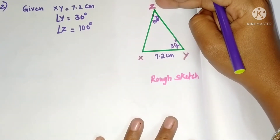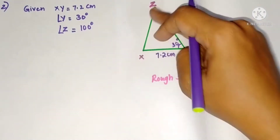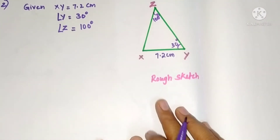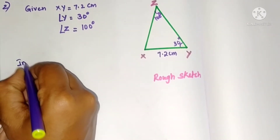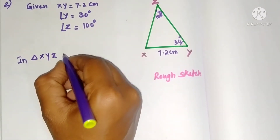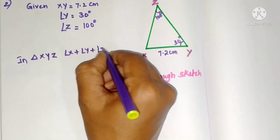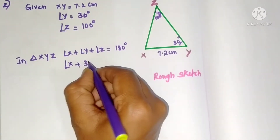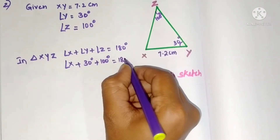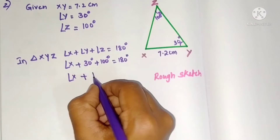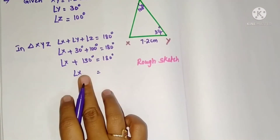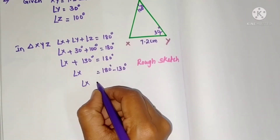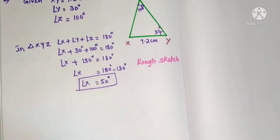Since placing the protractor at Z is difficult, when we know two angles we can find the third angle easily. The sum of three angles in a triangle is 180 degrees. In triangle XYZ: angle X plus angle Y plus angle Z equals 180 degrees. Substituting: angle X plus 30 plus 100 equals 180, so angle X plus 130 equals 180, giving angle X equals 50 degrees.